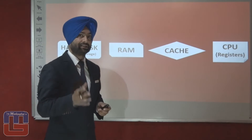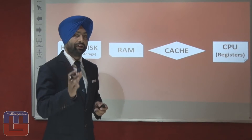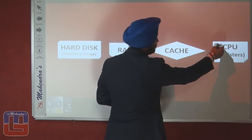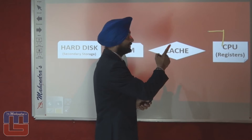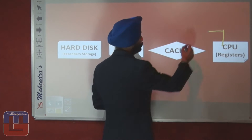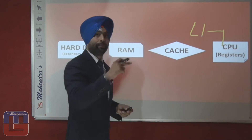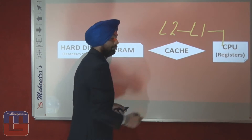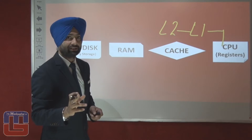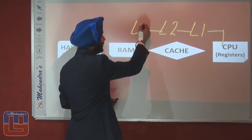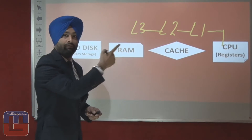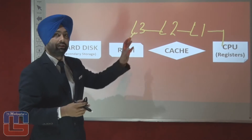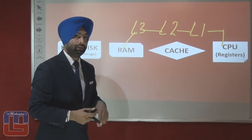Now we have different levels of cache. The first level located closest to the CPU is Level 1 cache, followed by Level 2 cache (L2), and finally Level 3 cache (L3). Level 1 is the closest to the CPU, Level 3 is the farthest, and Level 2 is the intermediary level between Level 1 and Level 3.